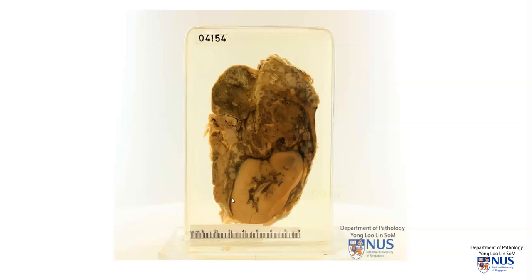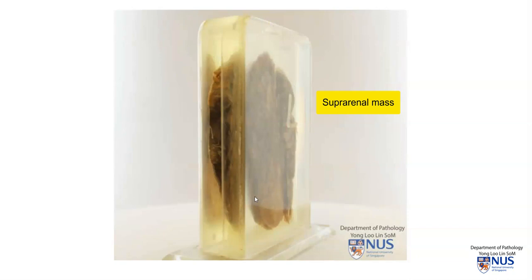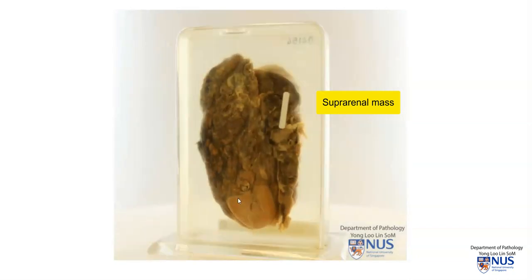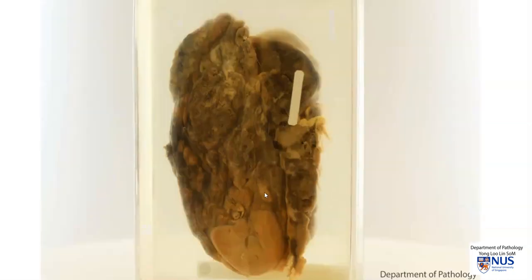Here is a specimen of a kidney that has been bisected with some surrounding tissue. We can see that there is an extremely large, very ill-defined mass superior to the upper pole of the kidney. Turning the specimen around, we can again see the kidney, which is quite sharply demarcated from this mass.